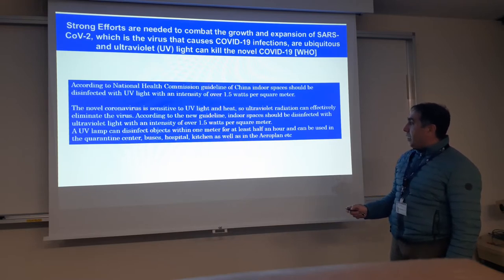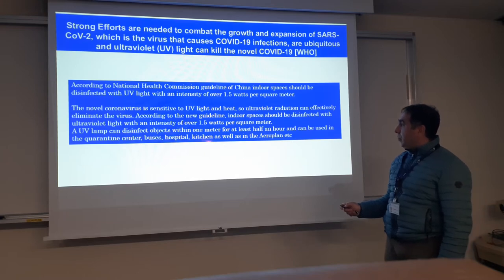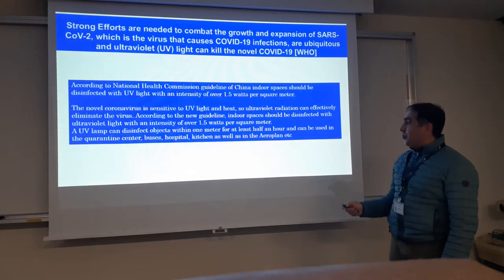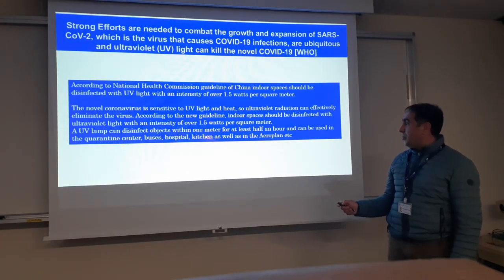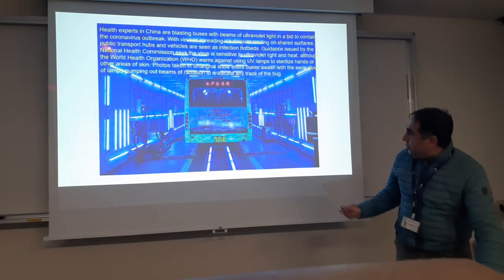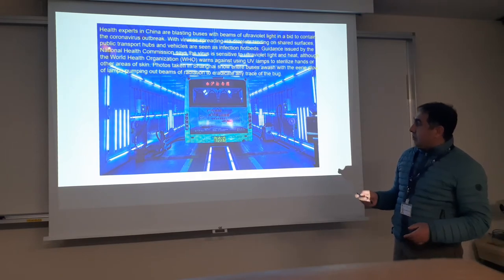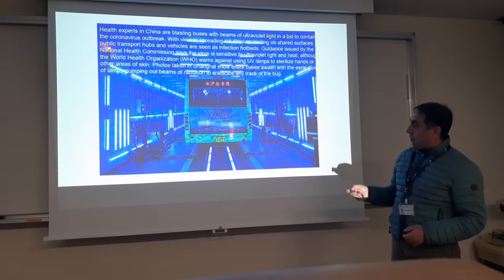UV lamps can disinfect objects within one meter for at least half an hour and can be used in quarantine centers, houses, buses, hospitals, kitchens, and aeroplanes. Here is one example of a bus — if the bus is coming across a coronavirus-infected area, you can clean it through UV light like this.